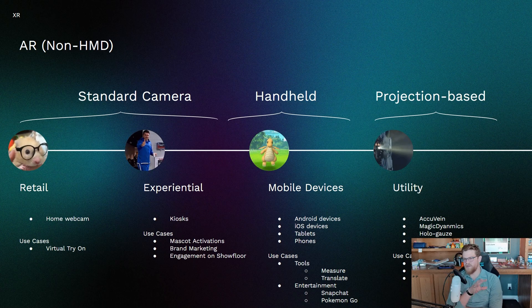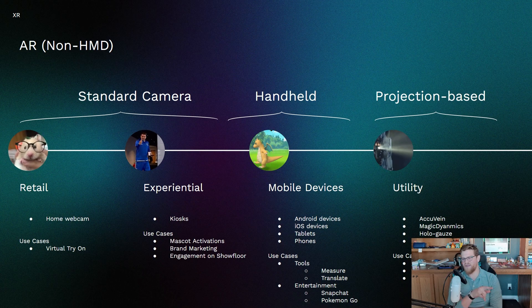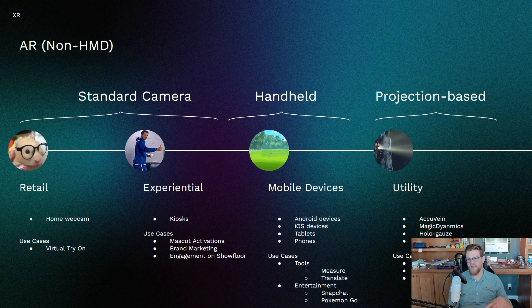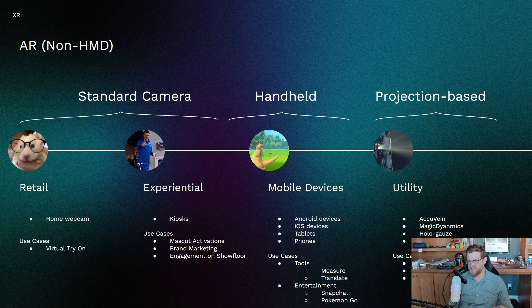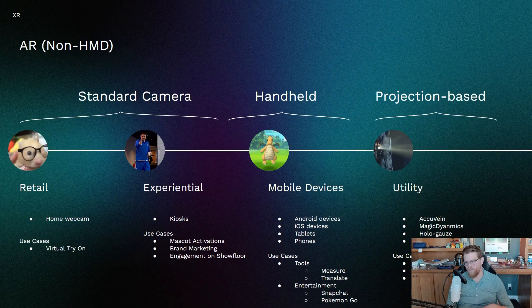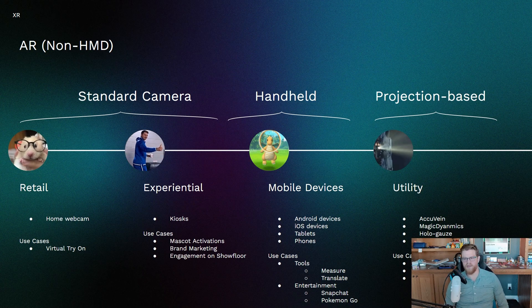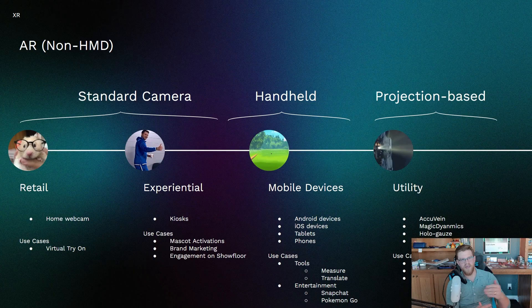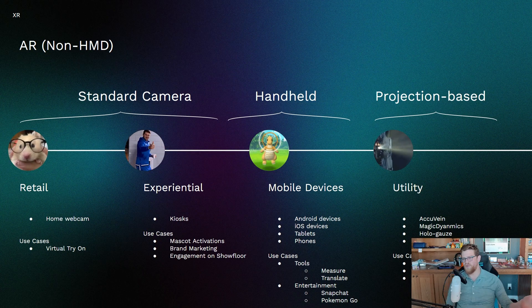Then you have projection-based AR. This one is really interesting. Things like AccuVein, where in the medical space they can overlay where your veins are using a projector so that it's easier to get in and do what needs to be done. Magic Dynamics and other entertainment-leaning game floor-projected experiences that you may have seen at a bowling alley or mall — a projected floor game that kids and adults can play with. You also have things like Hologauze, which is almost like a spider-web material that you can project into and communicate at 3D depth.